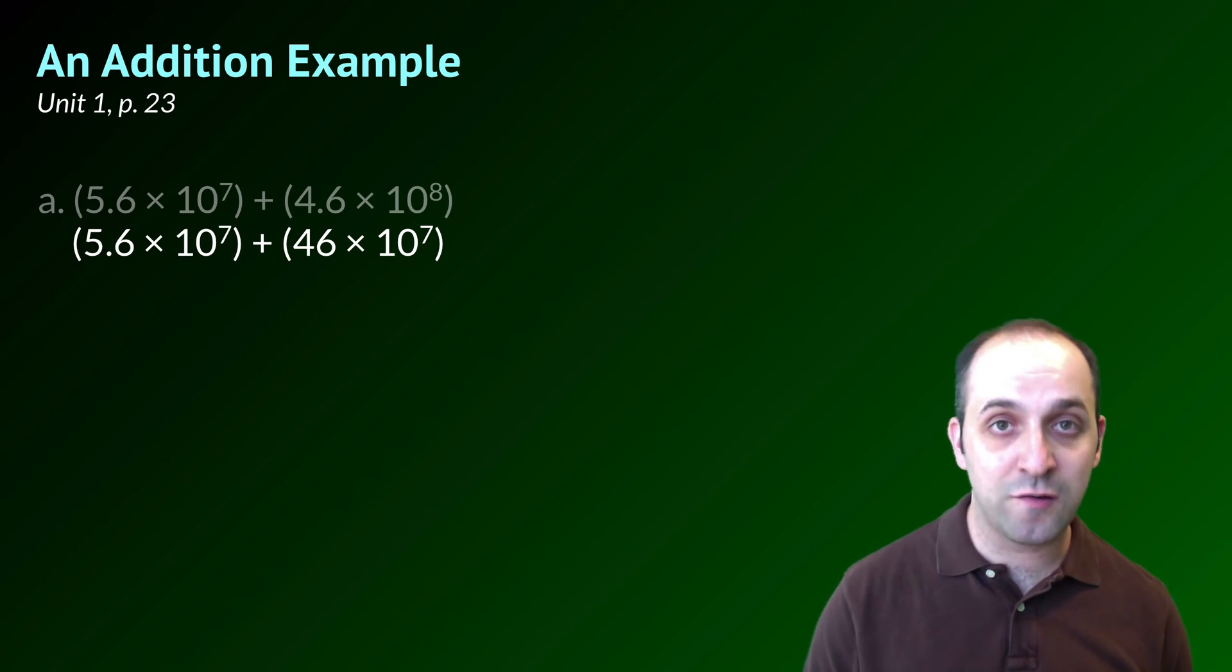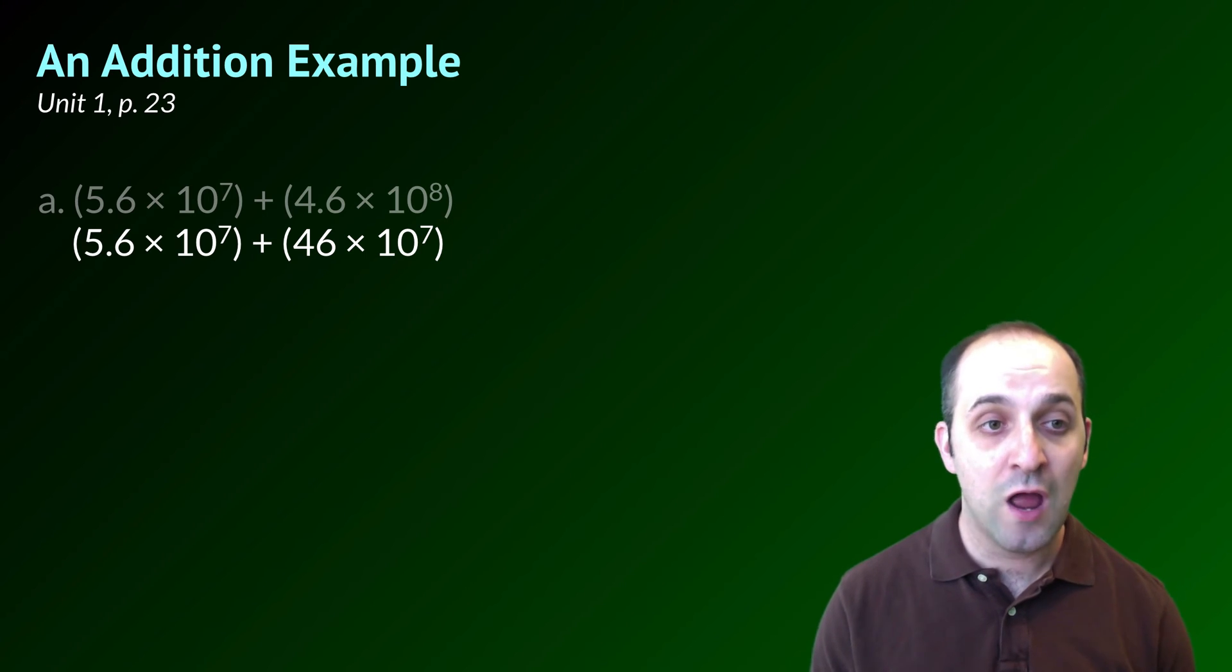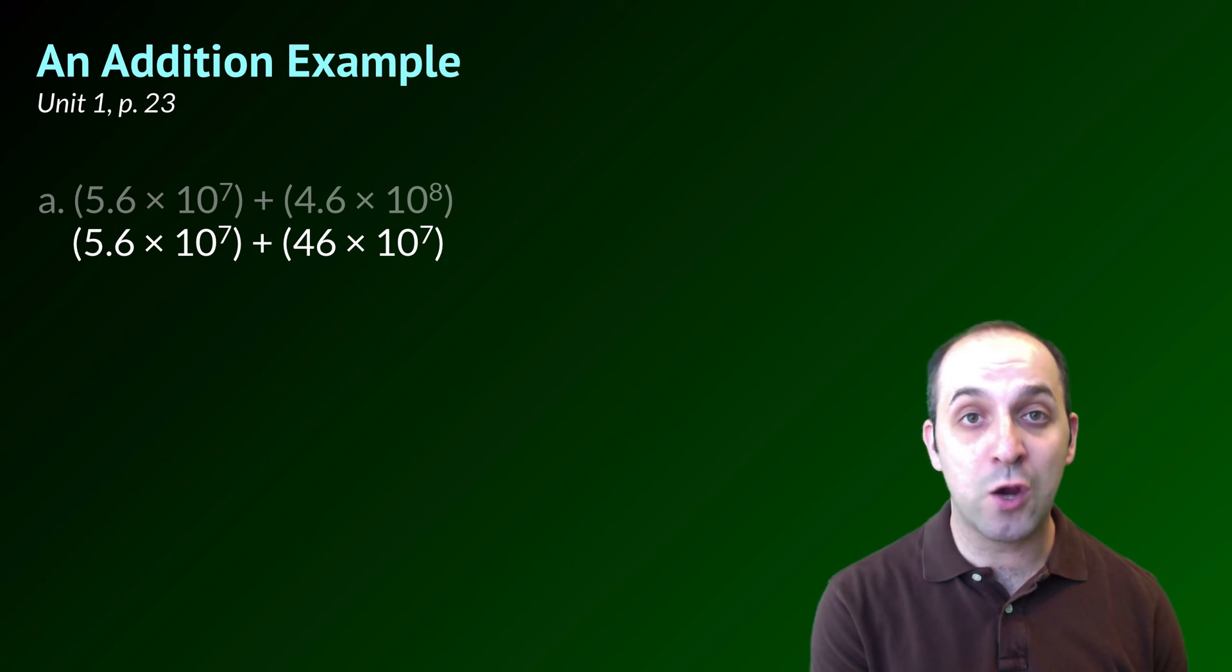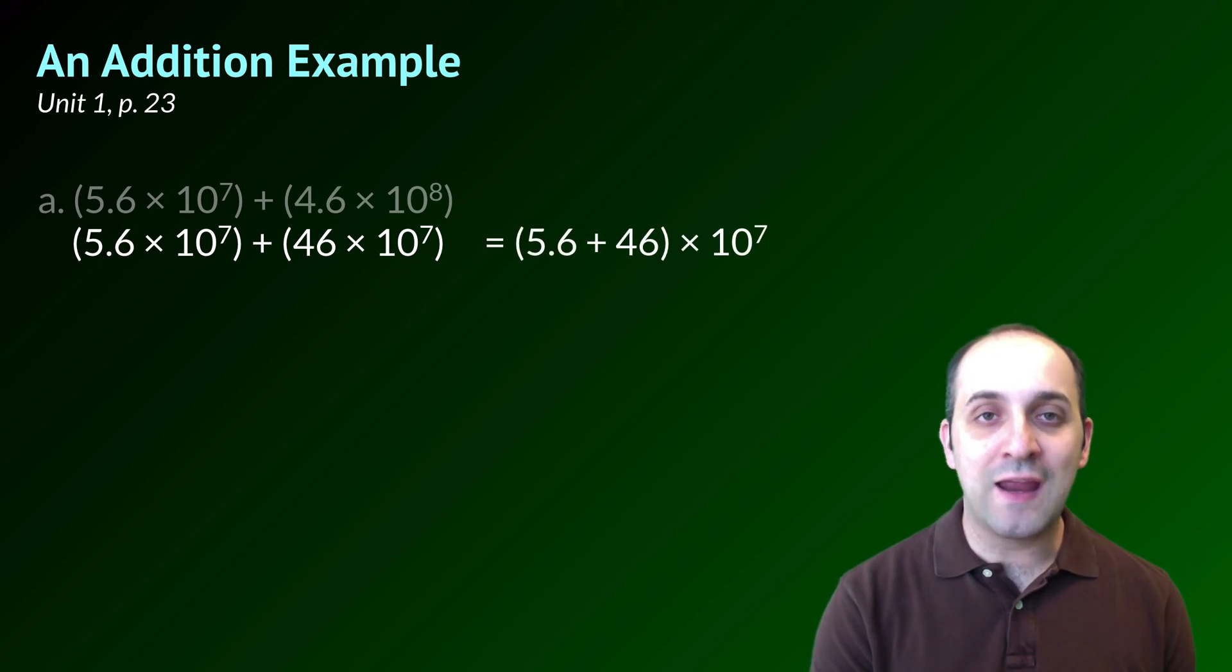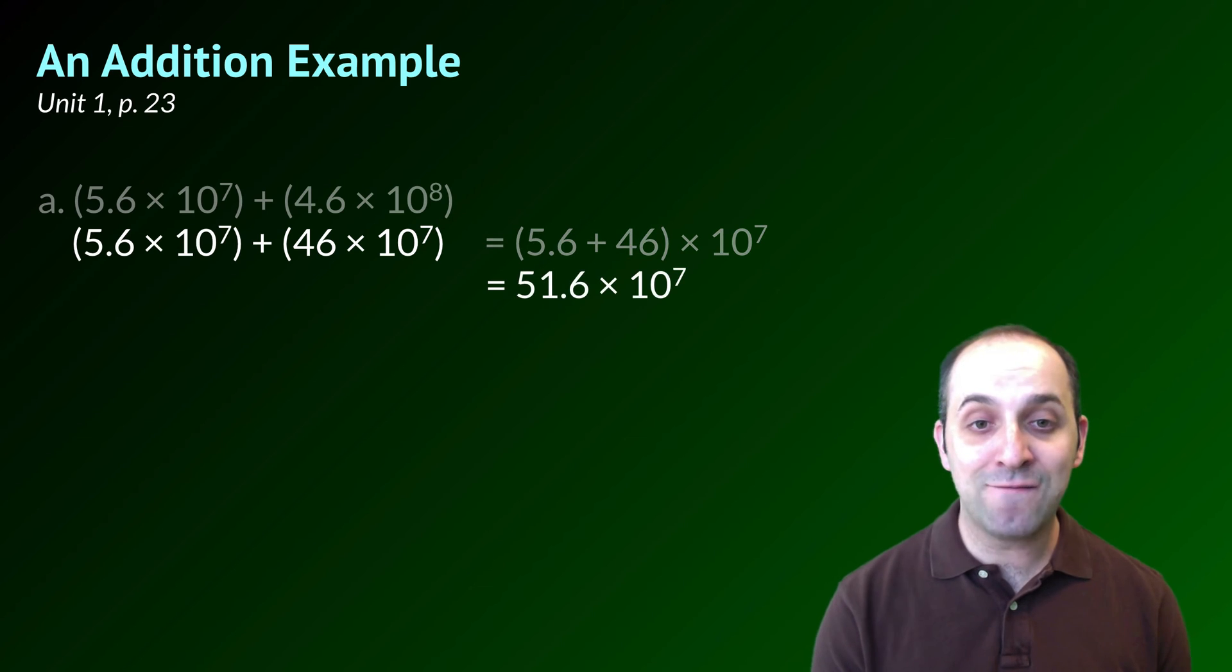Notice that since I had to adjust my exponent in my second term, I also have to adjust my coefficient. I made my exponent 1 power of 10 less, which means I had to make my coefficient 10 times larger. Once I do that, I can add these numbers together. It'll be 5.6 plus 46 times 10 to the 7th. When I add 5.6 and 46, I'm going to get 51.6 times 10 to the 7th power.